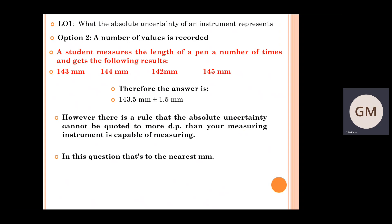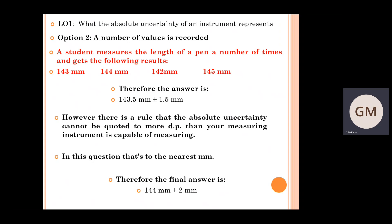However, there's a general rule that the absolute uncertainty cannot be quoted to more decimal places than your measuring instrument is capable of measuring. In this question, that's to the nearest millimetre. The final answer should be expressed as 144 millimetres, rounded from 143.5. To go to more decimal places would suggest to the reader that you can measure to a tenth or even hundredth of a millimetre, which a ruler cannot do. The absolute uncertainty of 1.5 millimetres also needs to be rounded to the nearest millimetre, giving 2 millimetres.